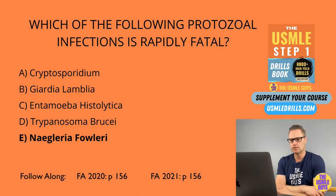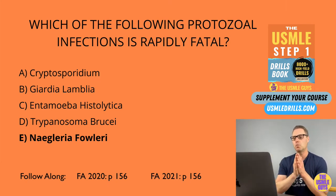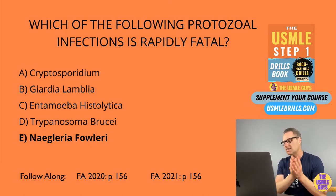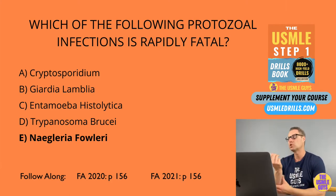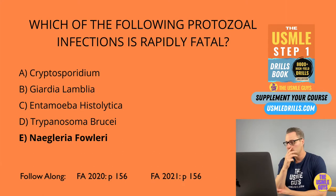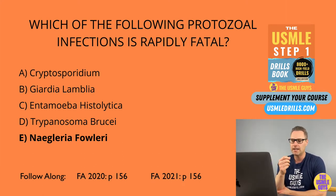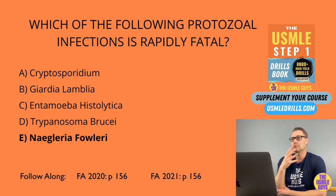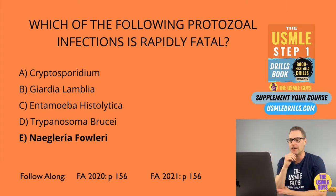The correct answer here is E. Let's start our discussion about CNS infections due to protozoa with Naegleria fowlerii. This is a cause of rapidly fatal meningoencephalitis caused by the organism getting through the cribriform plate while swimming in infected freshwater — keep that in mind. We can diagnose this by identifying the presence of amoebas in the CSF, and if we catch it early enough, amphotericin B will be the best bet to try and save your patient.